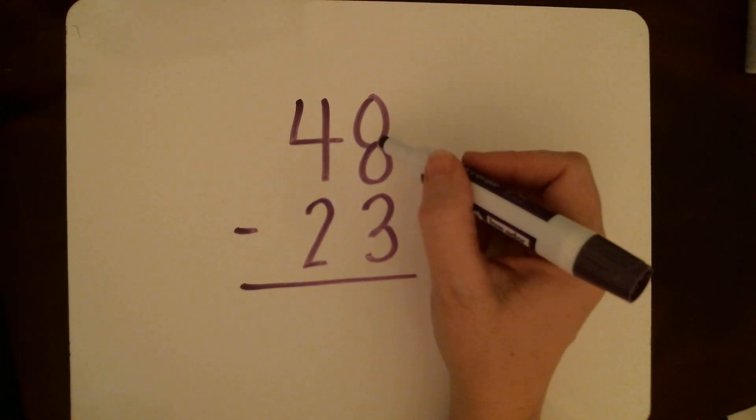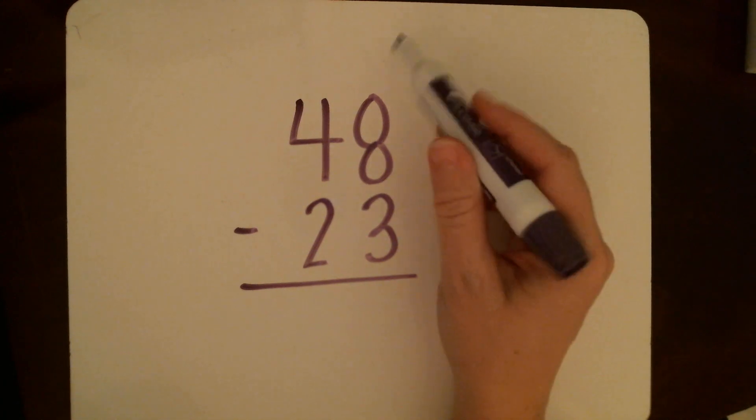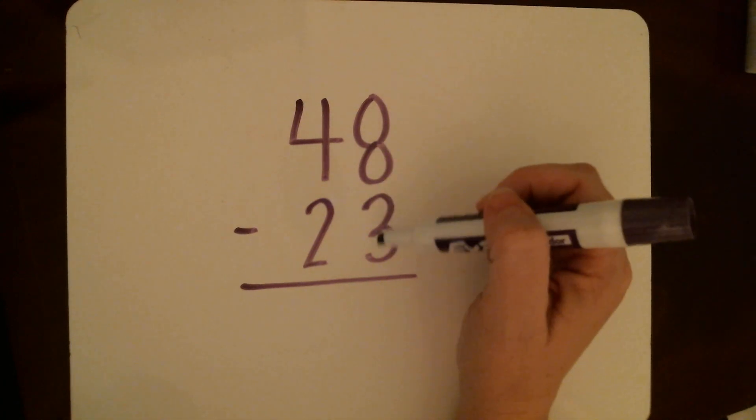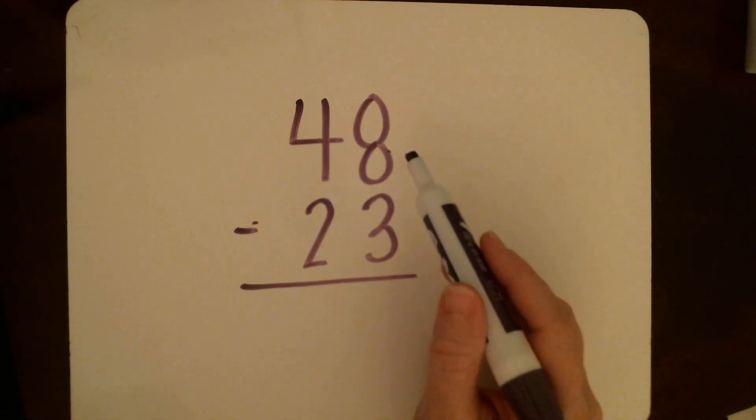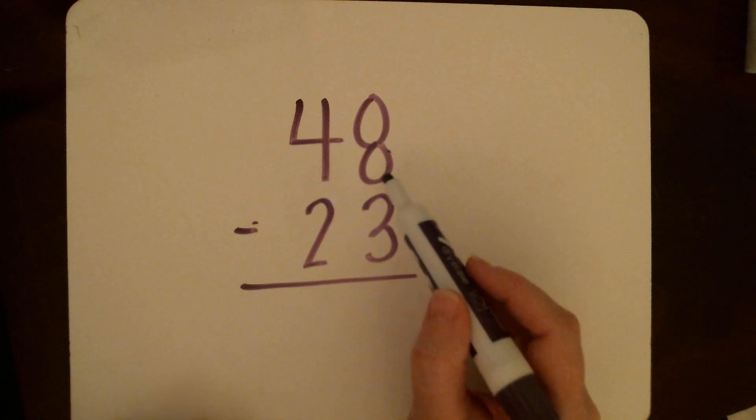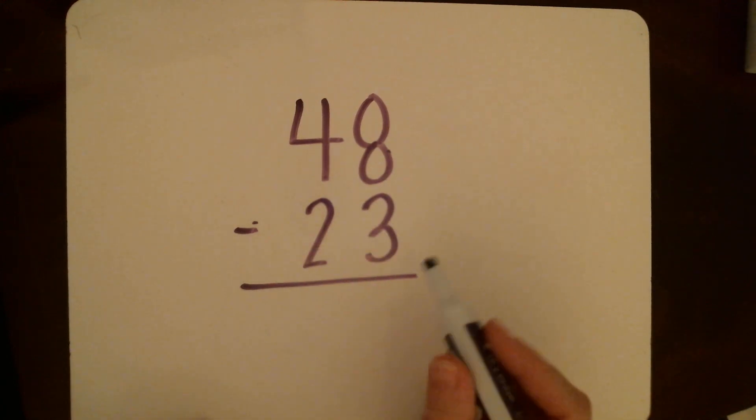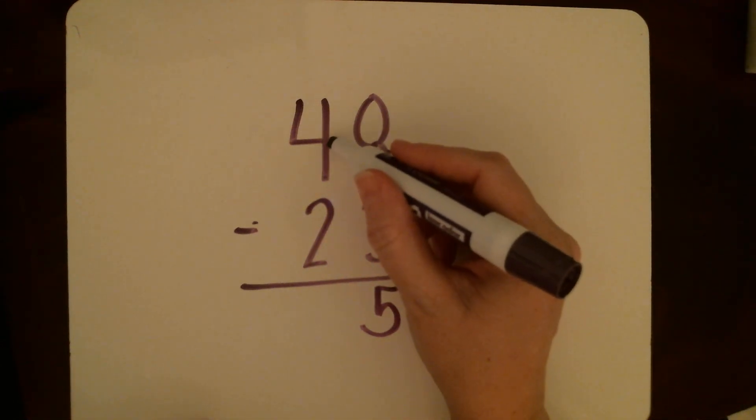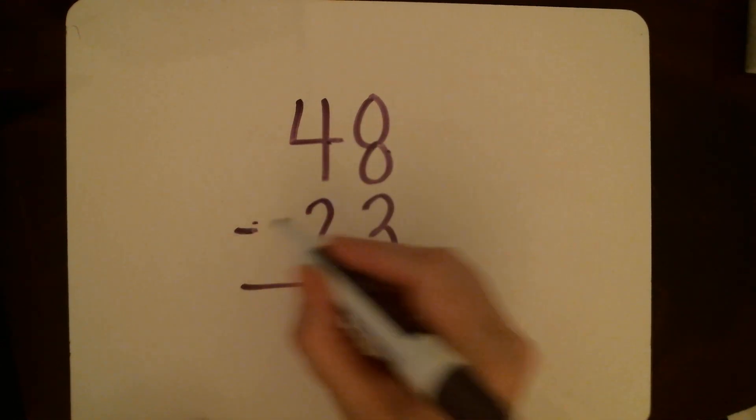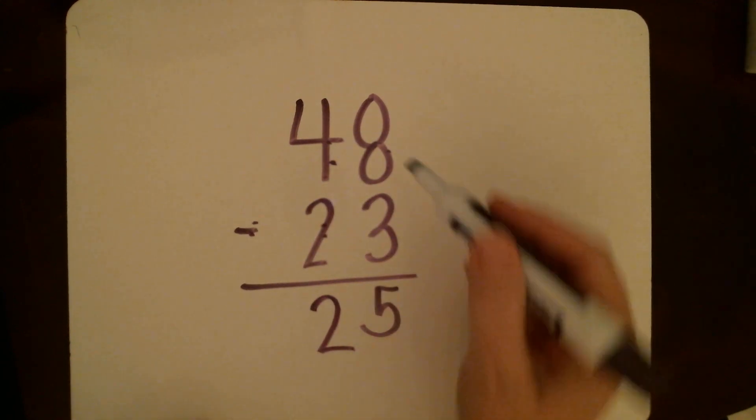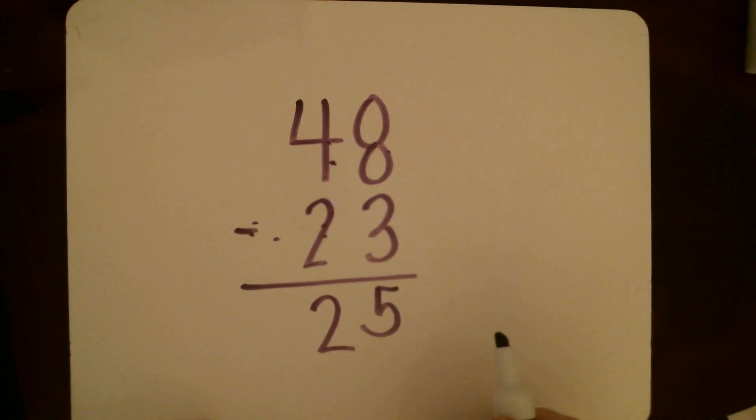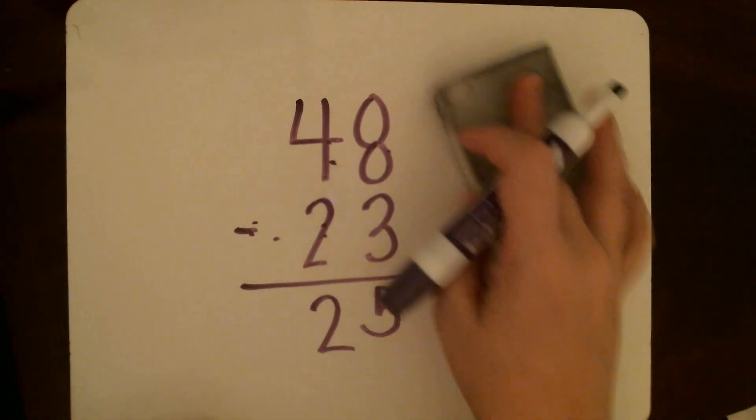Let's do another one: 48 minus 23. I want to start with my ones. Guys, make sure you're starting with those ones. Eight minus three, can I do that? Yes, eight is bigger than three so we can subtract it. Eight ones minus three ones is five ones. Then I come over to my tens, four tens minus two tens, forty minus twenty is twenty. So forty-eight minus twenty-three is twenty-five.